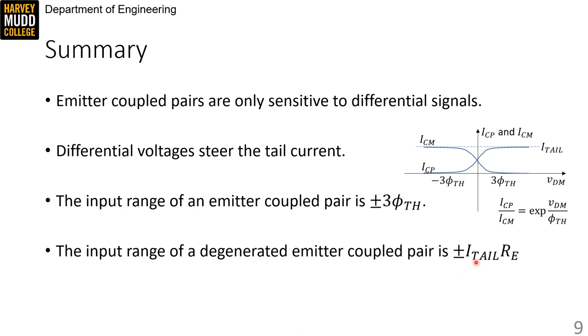So in summary, emitter coupled pairs are only sensitive to differential signals. Differential voltages steer the tail current from one side of an emitter coupled pair to the other, as indicated in this graph and by this equation. The input range of an emitter coupled pair is plus or minus 3 phi_TH. And the input range of a degenerated emitter coupled pair is plus or minus ITAL RE.